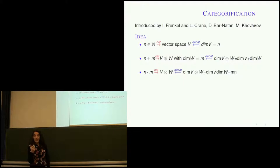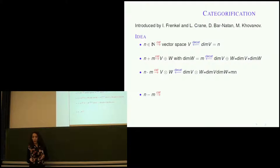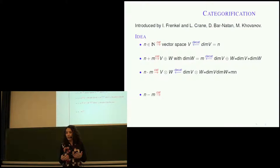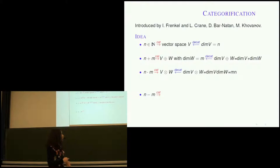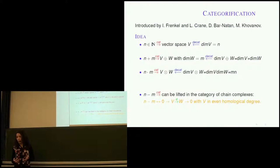What else can we do with natural numbers? We can subtract them, but then we leave the class of natural numbers because we can get a negative number. That's an issue — I don't know of any vector spaces of negative dimension. So how are we going to deal with lifting subtraction to something that works with vector spaces? We can lift it to a category of chain complexes, and you've seen quite a few chain complexes.